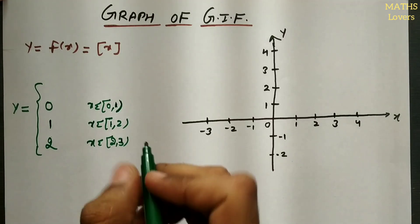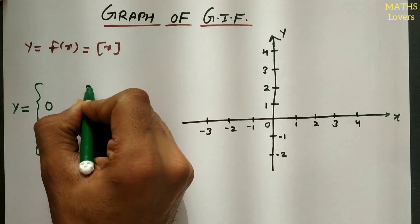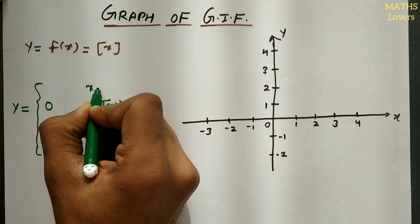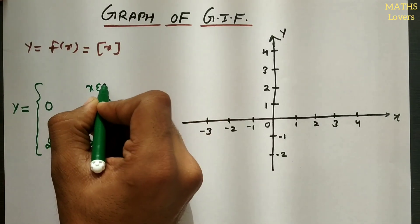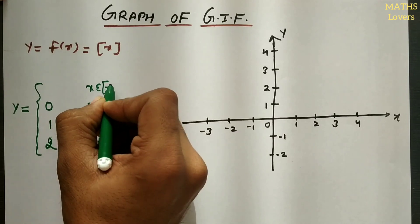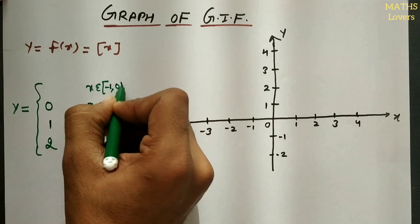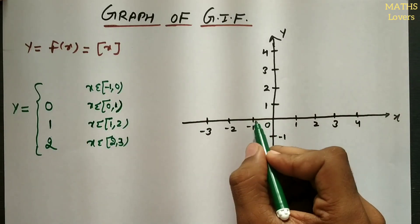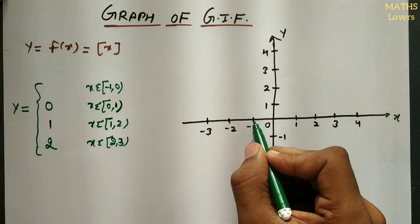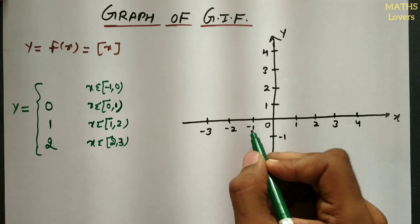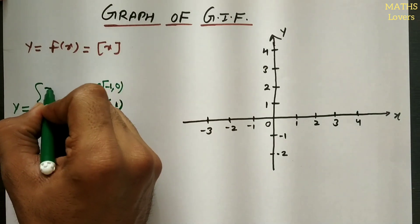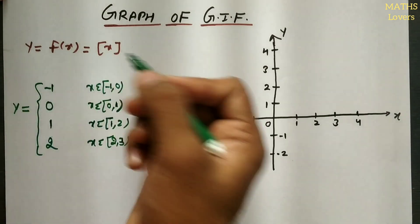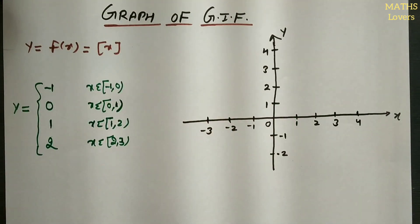Similarly for x in [3,4), y = 3 and [4,5), y = 4, and so on. For x belonging to [-1, 0), the greatest integer is minus 1. Similarly for [-2,-1) it is minus 2, and for [-3,-2) it is minus 3. Now we can draw the graph of GIF easily.